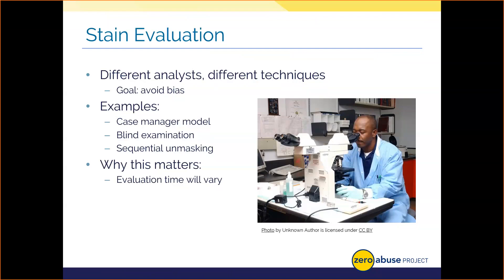To avoid bias in evidence processing that could lead to missed opportunities for discovering probative elements, we use several countermeasures. Under the case manager model, managers are fully informed about case context while examiners are provided only basic information needed for specific testing tasks. They may know they need to look for a stain and not much else. The case manager can then provide additional insight on an as-needed basis to avoid bias from creeping into the analyst's decision-making.